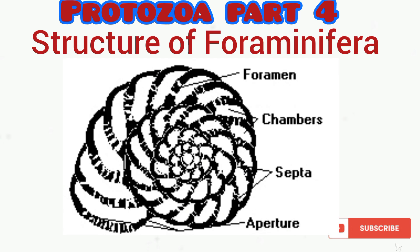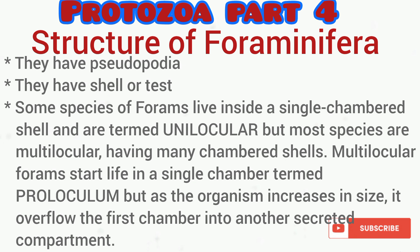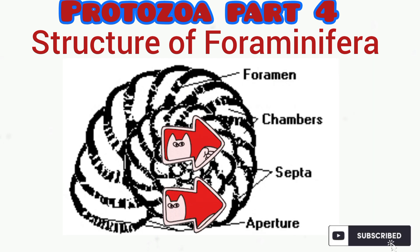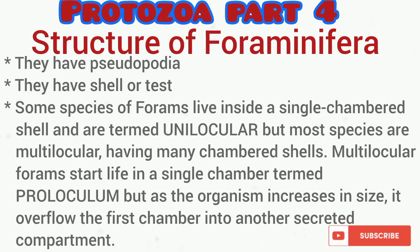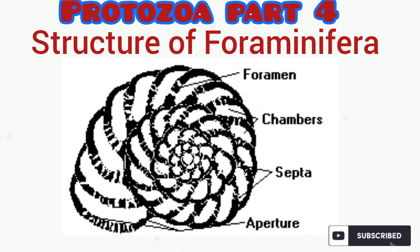Looking at the morphology or structure of the foraminiferans, as you can see from the diagram, the foramen gives the name foraminifera to the organism. The foramen is an opening or tube that interconnects all the chambers of the shell or test. Some foraminiferans possess one chamber and are regarded as unilocular, while others possess many chambers and are regarded as multilocular.